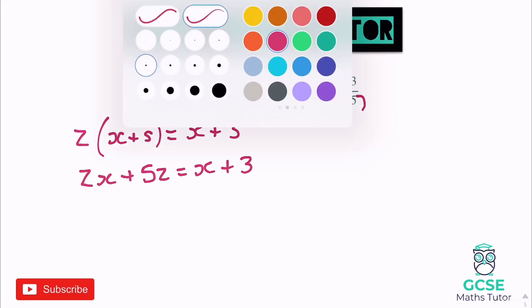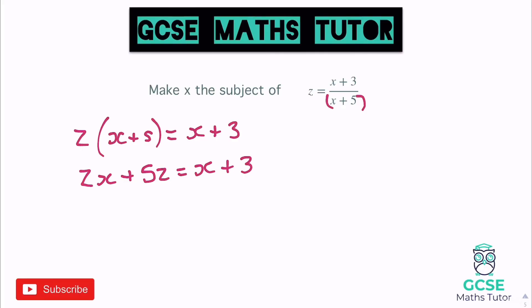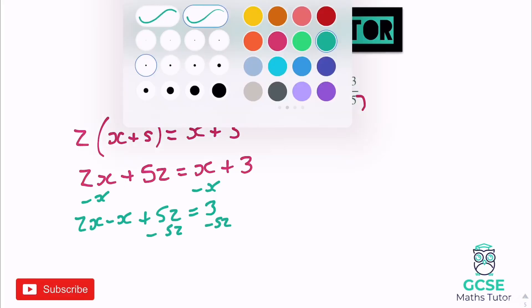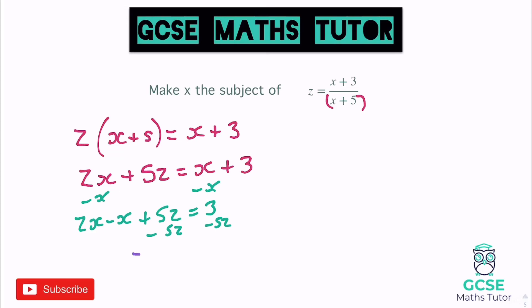Now we can just go about the process of getting the x's on the same side. Let's minus the x over — so zx minus x plus 5z equals 3. Now we'll minus this 5z, so minus 5z. That gives us zx minus x equals 3 minus 5z.